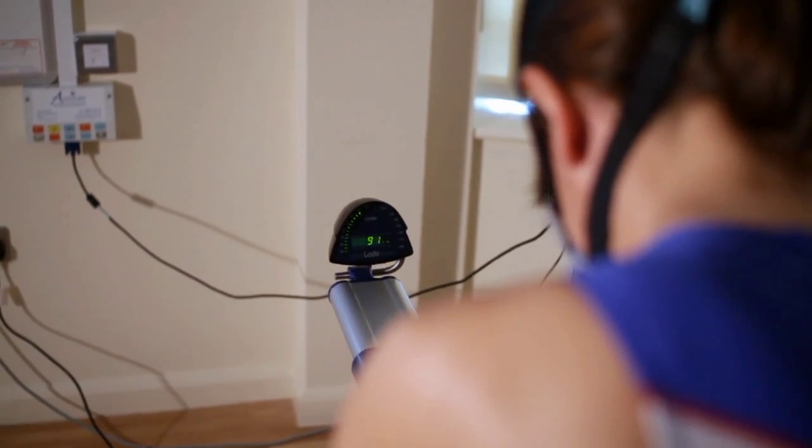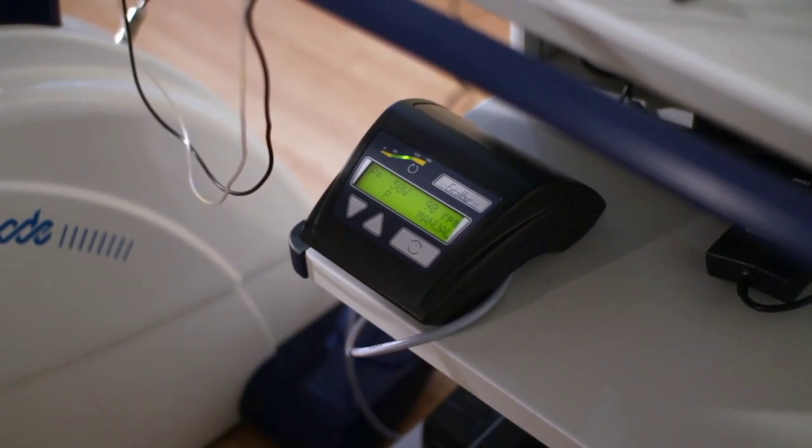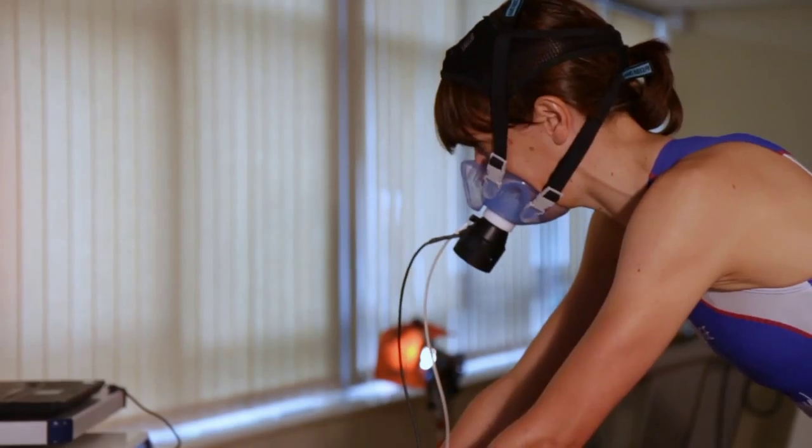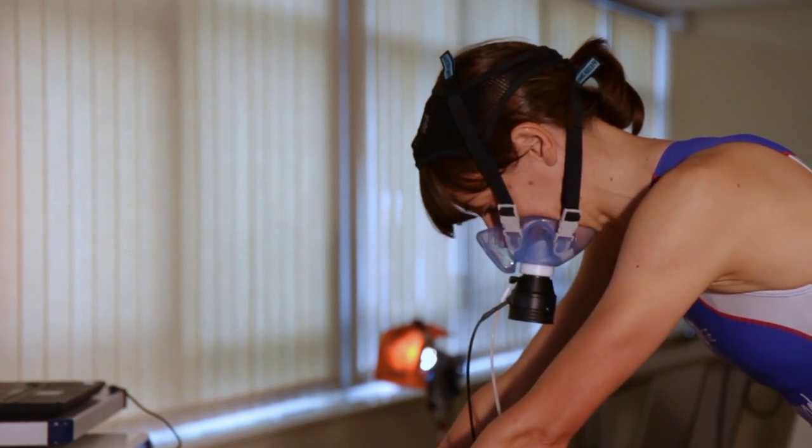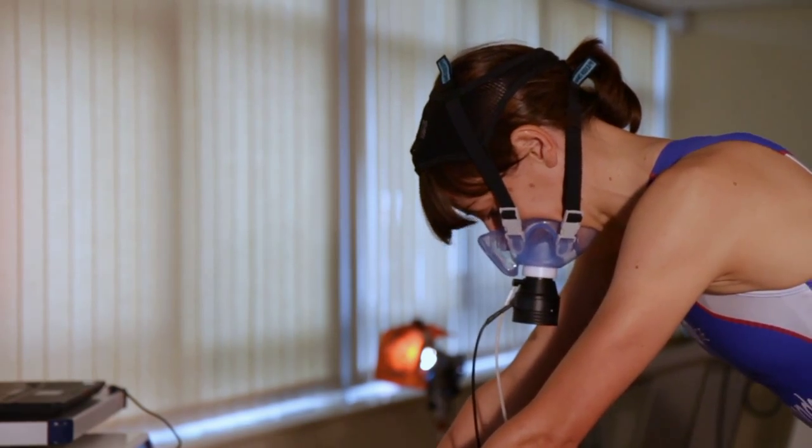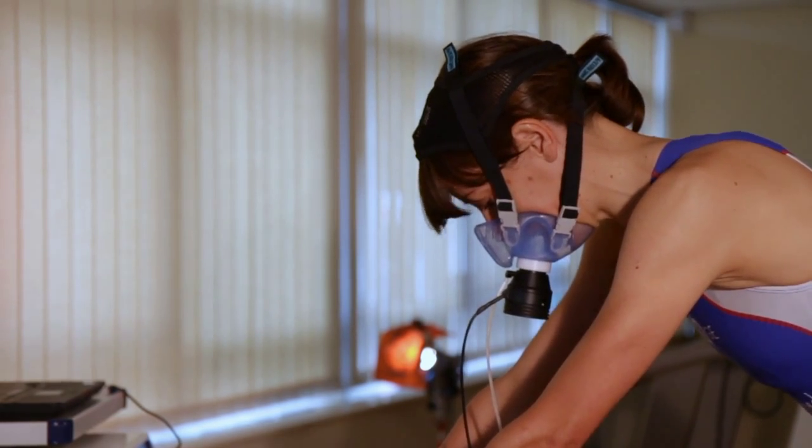The exercise intensity should increase progressively in both running and cycle tests. An increment of approximately 1.5 kilometers per hour should be used in running tests and an increment of approximately 30 watts should be used during cycle tests.